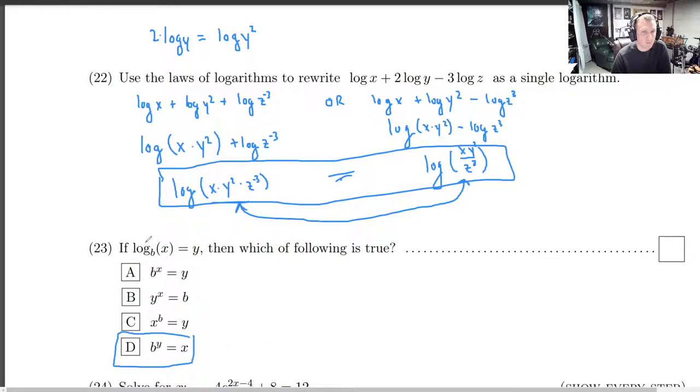The logarithm means what is the power of this base that gives you this? That's what you call this whole logarithm. The power of its base that gives you the argument. So in other words the base to that power is the argument.